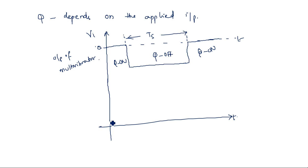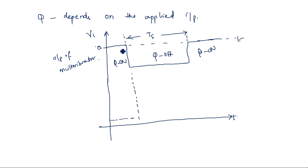Initially the capacitor charges when the transistor is in off state. When the transistor is in on state — because we are having low input voltage — in the first case if the transistor is on, the capacitor has no voltage; it is completely discharged.